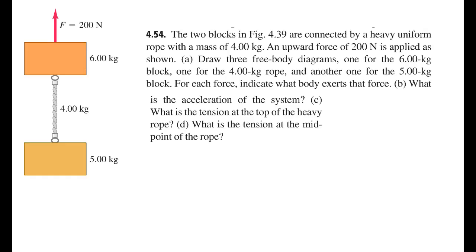In this one, I'm looking at problem 4.54 in your book. We have a two-block system with some net force acting up. The two blocks in this figure are connected by a heavy uniform rope — uniform means the same thickness throughout — with a mass of 4 kilograms. An upward force of 200 newtons is applied. We need to draw three free-body diagrams: one for the 6-kilogram block, one for the 4-kilogram rope, and one for the 5-kilogram block, indicating what body exerts each force.